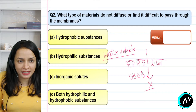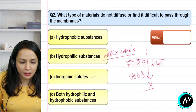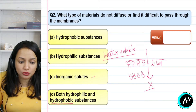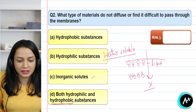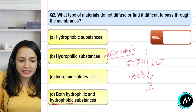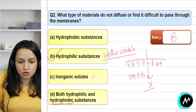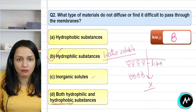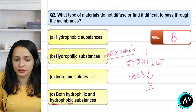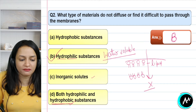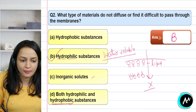The third option is organic solutes, and the fourth is both hydrophilic and hydrophobic. Hydrophobic substances can move through the lipid membrane, but hydrophilic substances cannot. The D combination is not correct. So the correct option for question 2 is B — hydrophilic substances, which are water-soluble or water-loving. They cannot directly diffuse or cross the membrane, so special channels and pores exist for them.